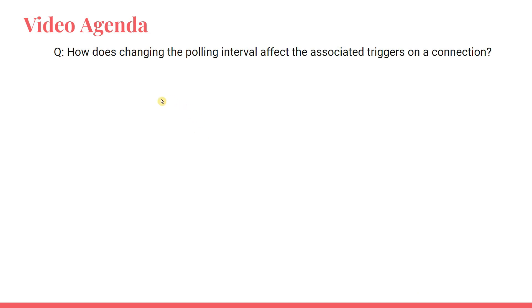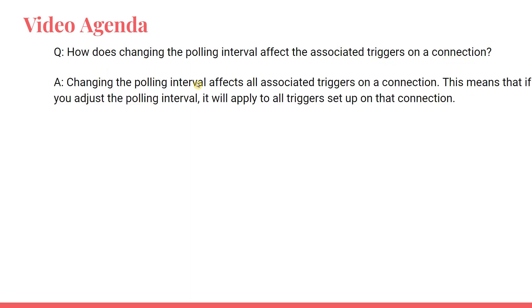How does changing the polling interval affect the associated triggers on a connection? Changing the polling interval affects all associated triggers on a connection. This means that if you adjust the polling interval, it will apply to all triggers set up for that connection. So if you consider the connection as a parent — like the OneDrive connection — the triggers are children of that parent. If you set a polling interval of five minutes, one minute, or two minutes, that time applies to all the triggers.